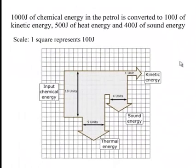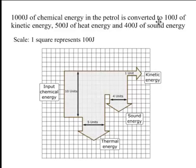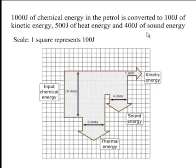If we look at an example: if we have 1,000 joules of chemical energy in the petrol, and of that 1,000 joules, 100 joules will come out as useful kinetic energy, 500 joules as heat energy, and 400 joules of sound energy.